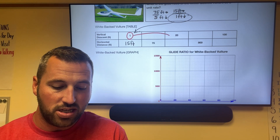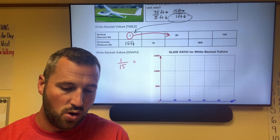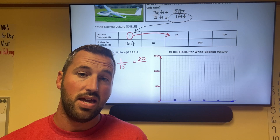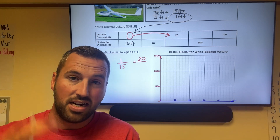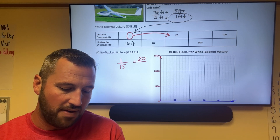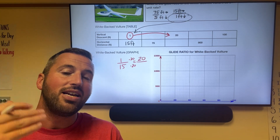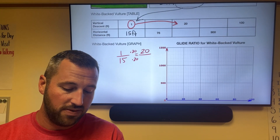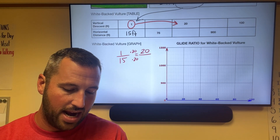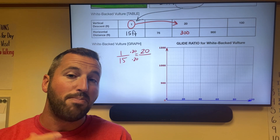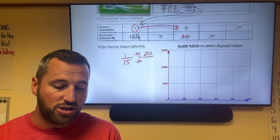Option one: I'm looking at one over 15, and I want to get to 20 over something. What's the multiplier? Well, it's times 20. Whatever we do to the top we do to the bottom. So one times 20 is 20, and 15 times 20 is 300. That's one way to find the equivalent ratio visually.